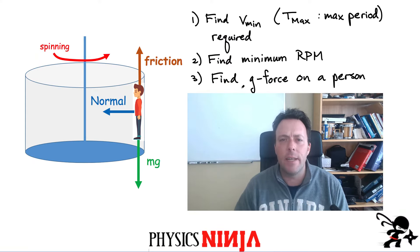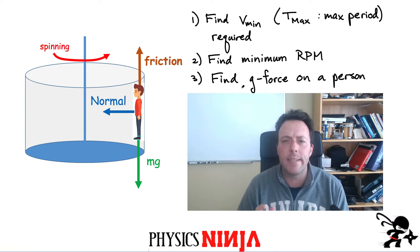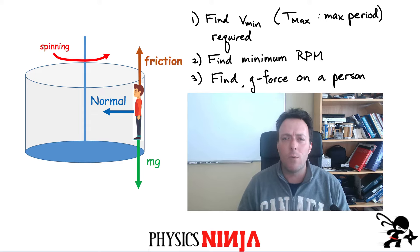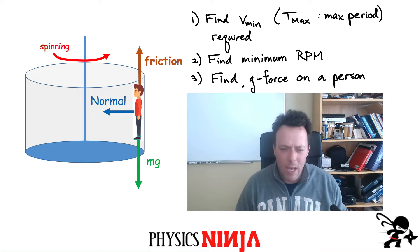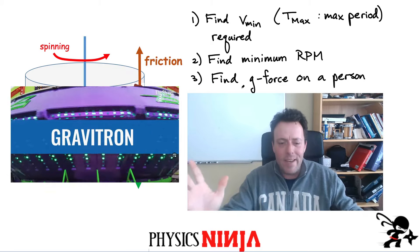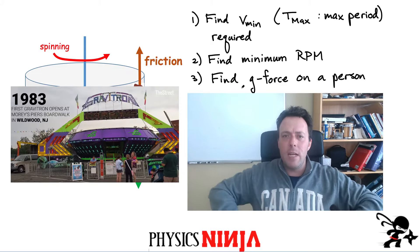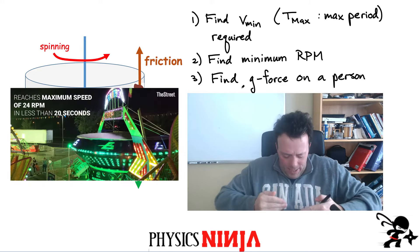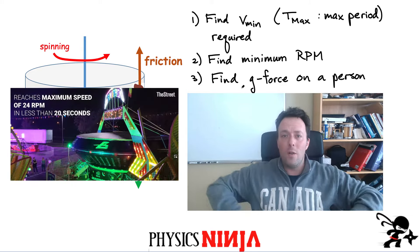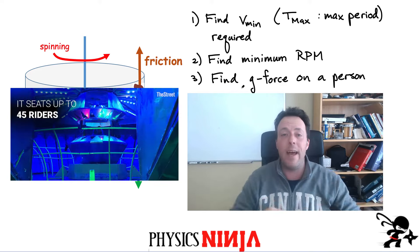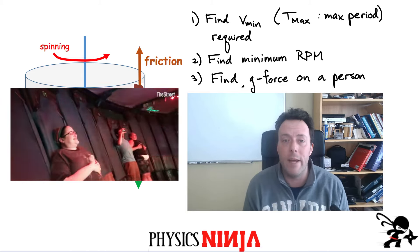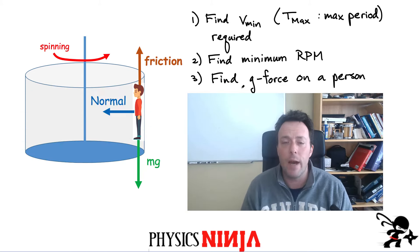Hi everybody, Physics Ninja here. Today I want to look at a classic physics problem involving a person riding an amusement park ride. Where I grew up that ride was called the Gravitron — a UFO-looking device where you got inside, leaned up against the wall, it starts spinning really fast, and eventually the floor drops and you're stuck to the wall as you spin.